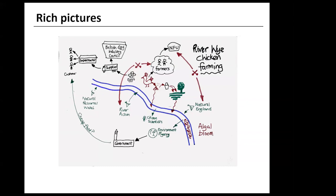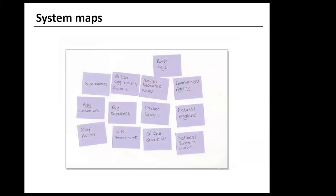Note that what you include or leave out of the rich picture reflects your own boundary judgement. For example, it would be easy to overlook the British Egg Industry Council or the National Farmers Union, but doing so might mean that we fail to consider an important part of the river-wise situation.